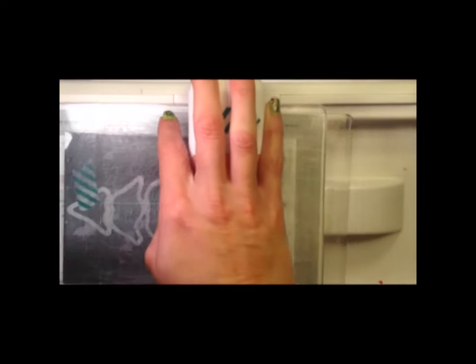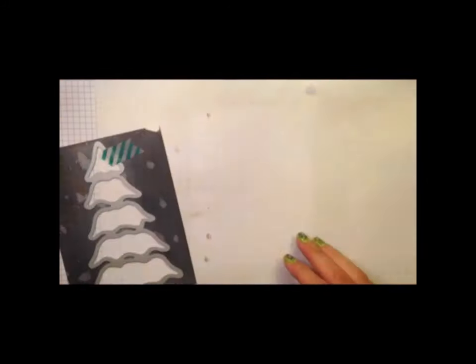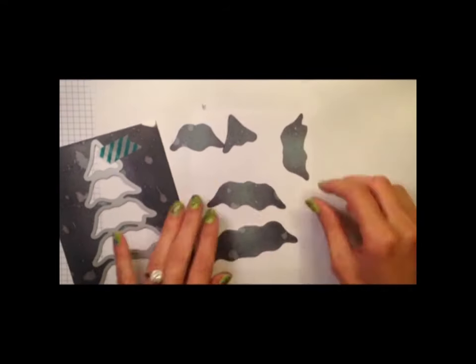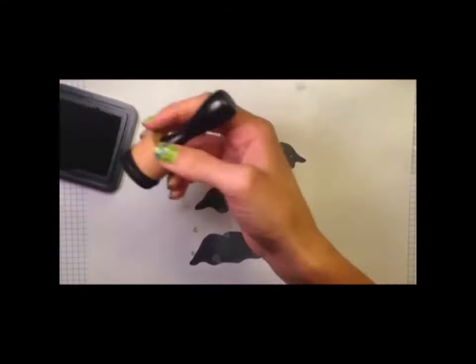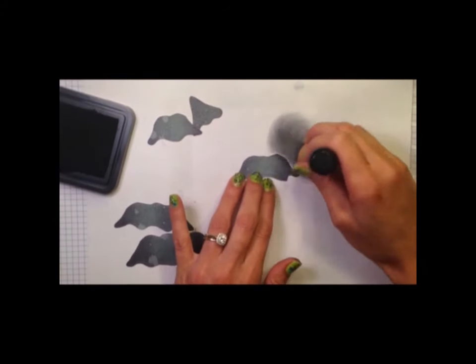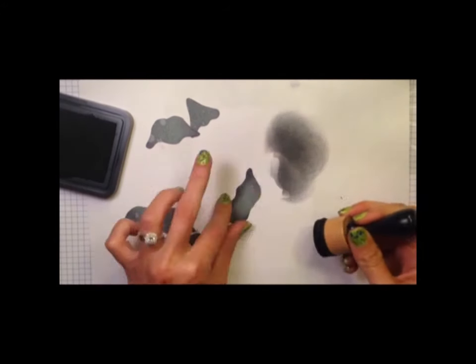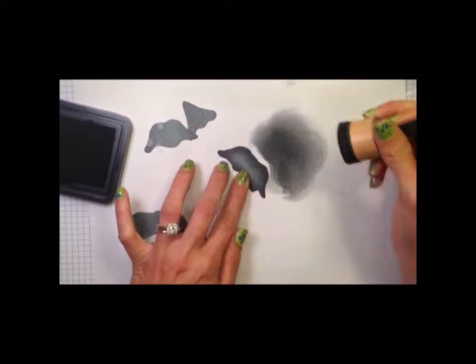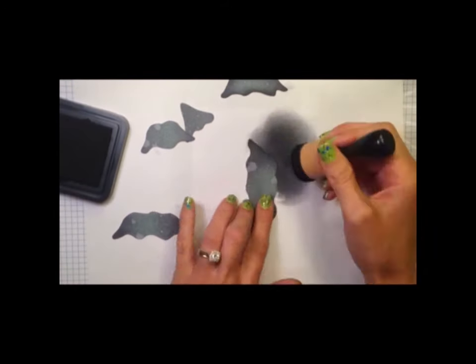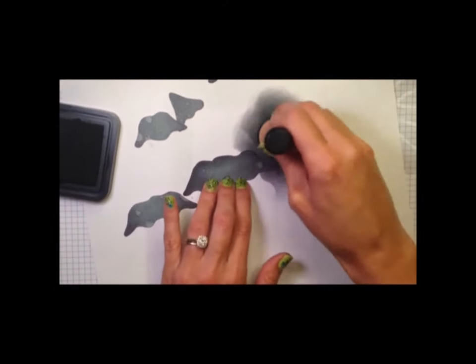Now I'm ready to run it through my die cutting machine. Here are the pieces. There's five sections of the tree with stitching around each section. I'm going to take my blending tool and blend on some more Black Soot to really make the tree pop and have a more finished look.